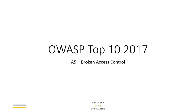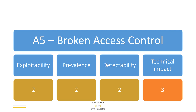Welcome back to this series on the OWASP Top 10 for 2017. At number five we have a new entry which was actually created from two separate entries: insecure direct object references and missing function level access control. The reason the two were merged is that they are very similar — the outcomes are similar and the controls used to protect against them are the same. So they've been merged in the 2017 list into A5: Broken Access Control.